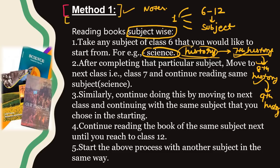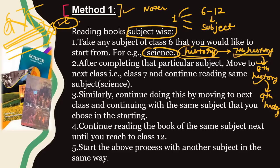By doing this, you move to the next class and continue with the same subject that you chose in the starting. Continue reading the book of the same subject next until you reach class 12. By using this method, you can complete one subject in a very structured manner.